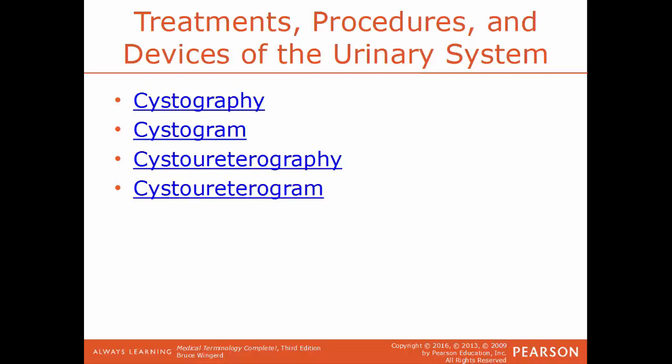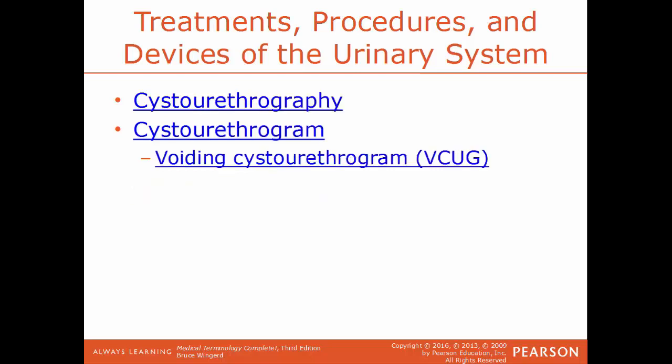Cystoureterography would be a radiologic test of not only the urinary bladder but also the ureters, checking for any obstructions, blockages, malformations, or abnormalities. The result would be a cystoureterogram. A similar test is cystourethrography, a visual examination of the urinary bladder plus the urethra, and the result would be a cystourethrogram.